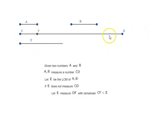If E does not measure CD, it must measure some number less than CD where the remainder CF would be less than E.